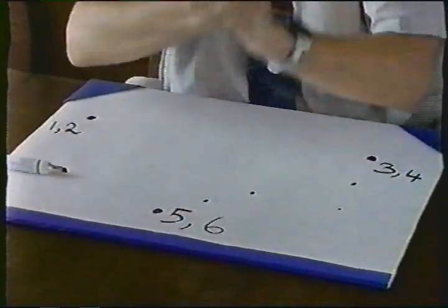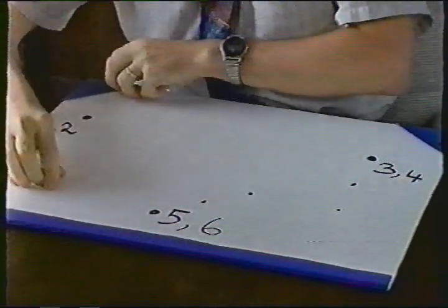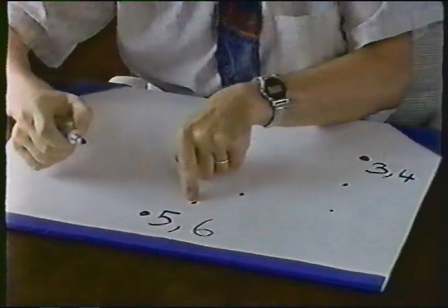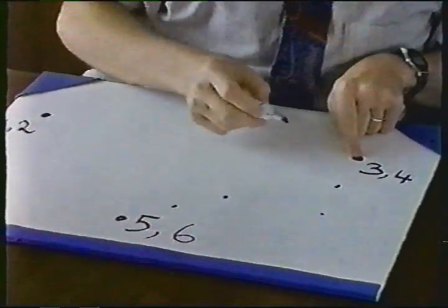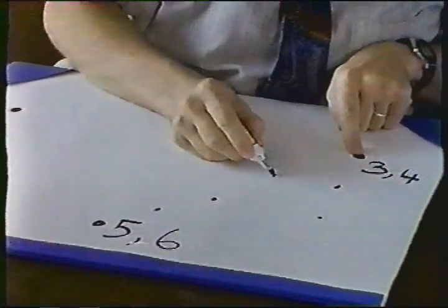And now I roll the die, and this time it comes up with a three, so I go halfway from my new point to the big dot marked three, and that'll be about here.